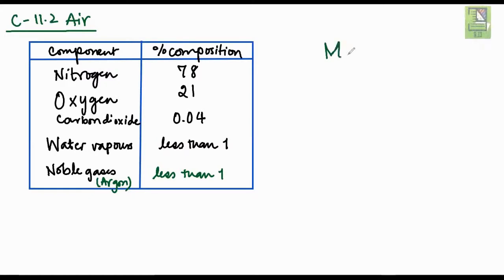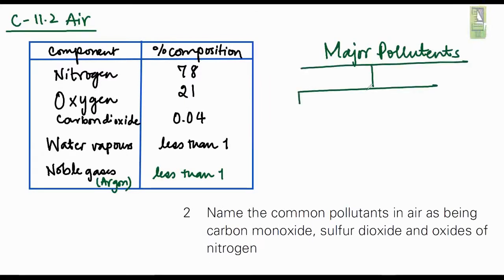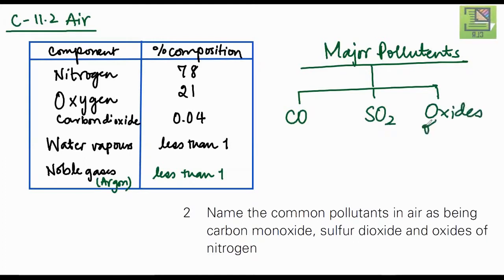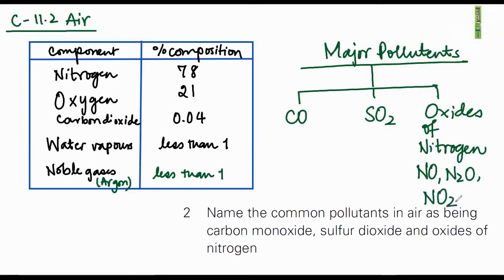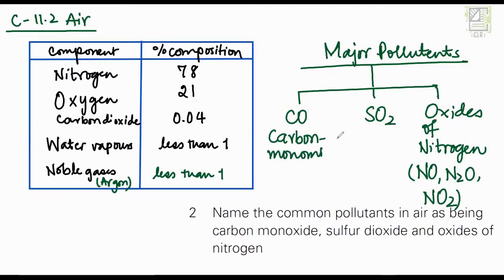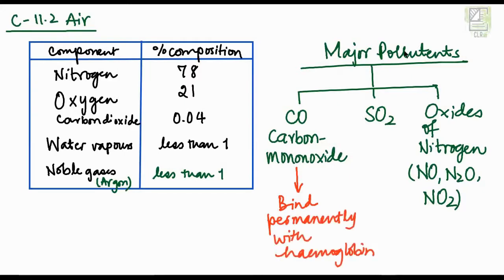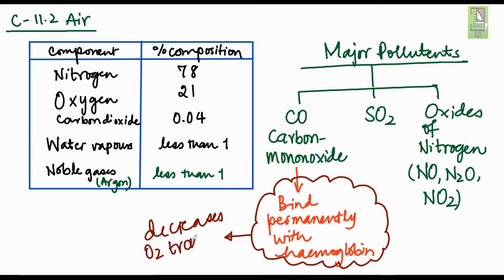According to the syllabus, we need to know three major air pollutants: carbon monoxide (CO), sulfur dioxide (SO₂), and oxides of nitrogen — which include NO (nitrogen monoxide), N₂O (dinitrogen oxide), and NO₂ (nitrogen dioxide). Carbon monoxide is extremely harmful because it binds permanently with hemoglobin, decreasing the oxygen-carrying capacity and oxygen transport ability of the blood.